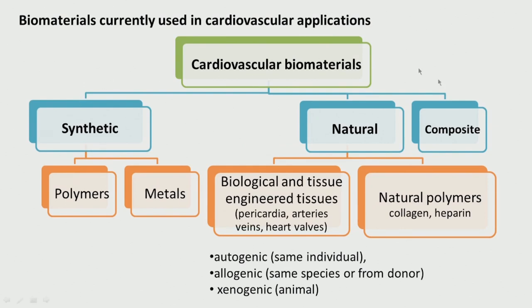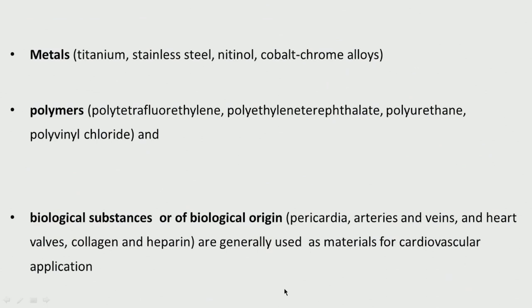We can have synthetic material, natural or composite. Synthetic could be polymers and of course metals. Natural could be biological and tissue-engineered like pericardia, arteries, veins, and natural polymers like collagen and heparin. The biological tissues could be autogenic from the individual, allogenic from the same species or from a donor, and xenogenic which could be from an animal. Each has its advantages and disadvantages.